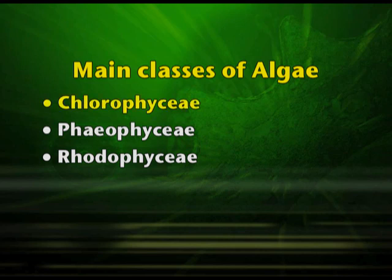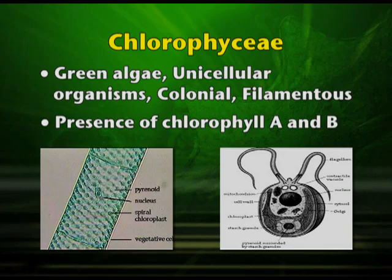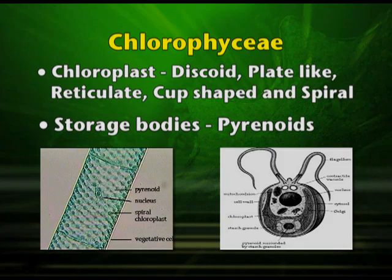Characteristics exhibited by Chlorophyceae: mostly they are green algae, they are unicellular organisms. They may be colonial or filamentous. They have the presence of chlorophyll A and B. The cell wall is made up of cellulose. The chloroplast is of various different shapes — it may be discoid, plate-like, reticulate, cup-shaped, or spiral. The storage bodies are the pyrenoids which store starch in them.